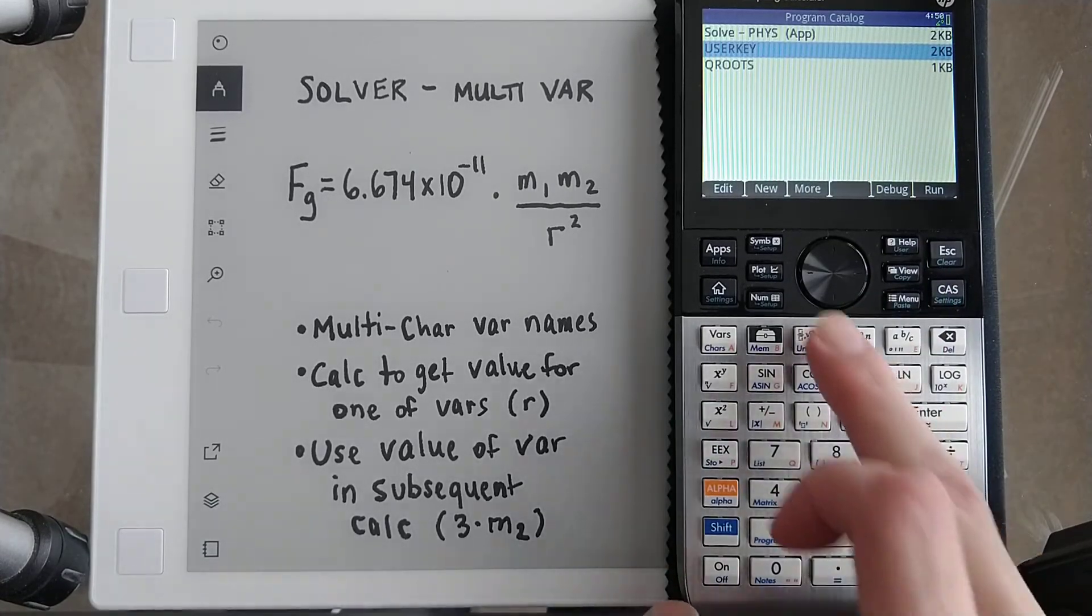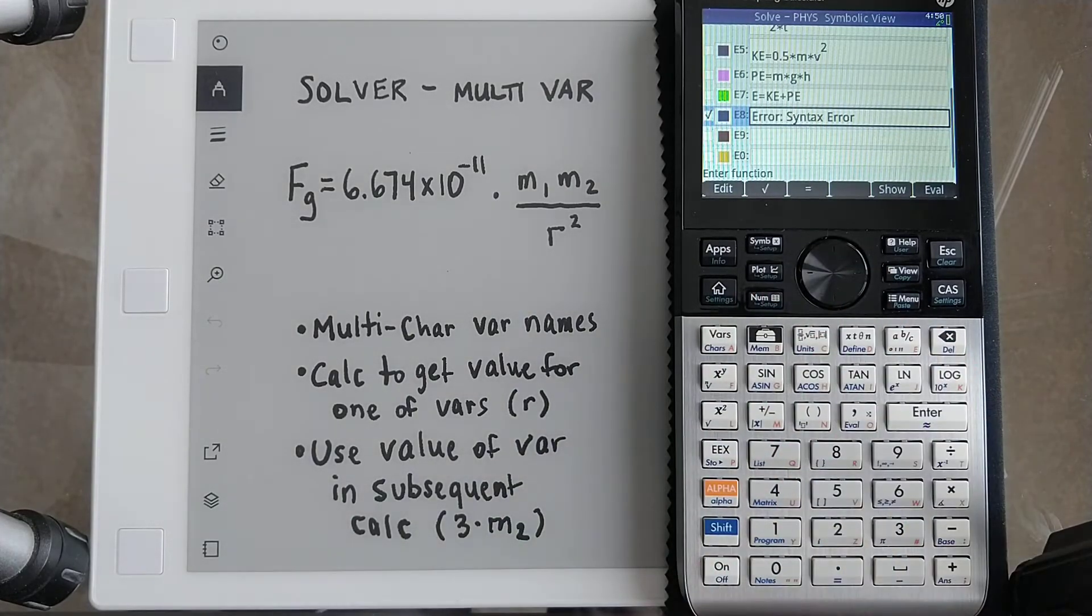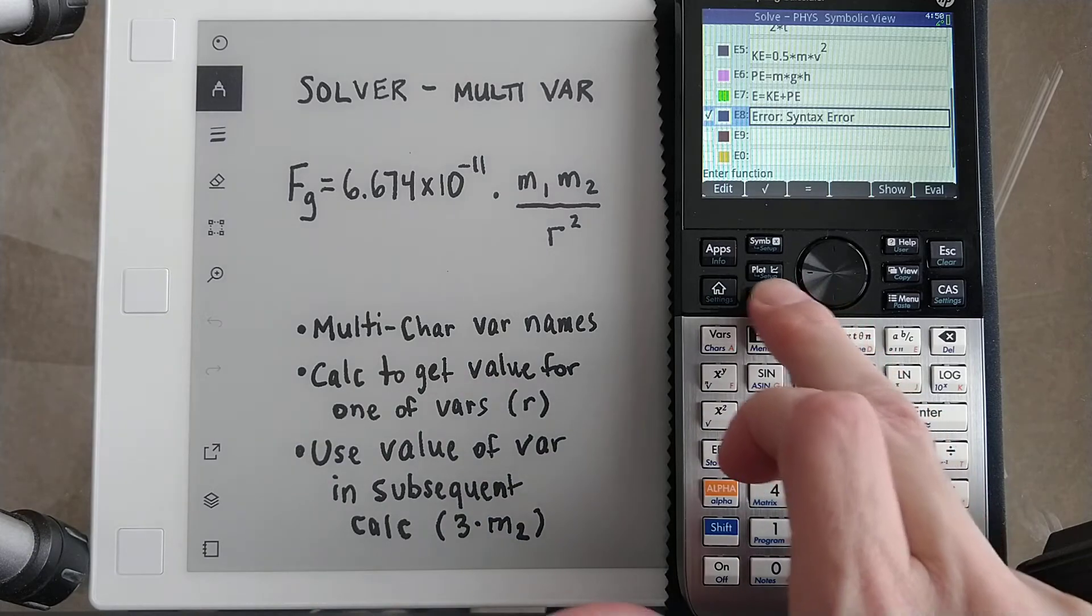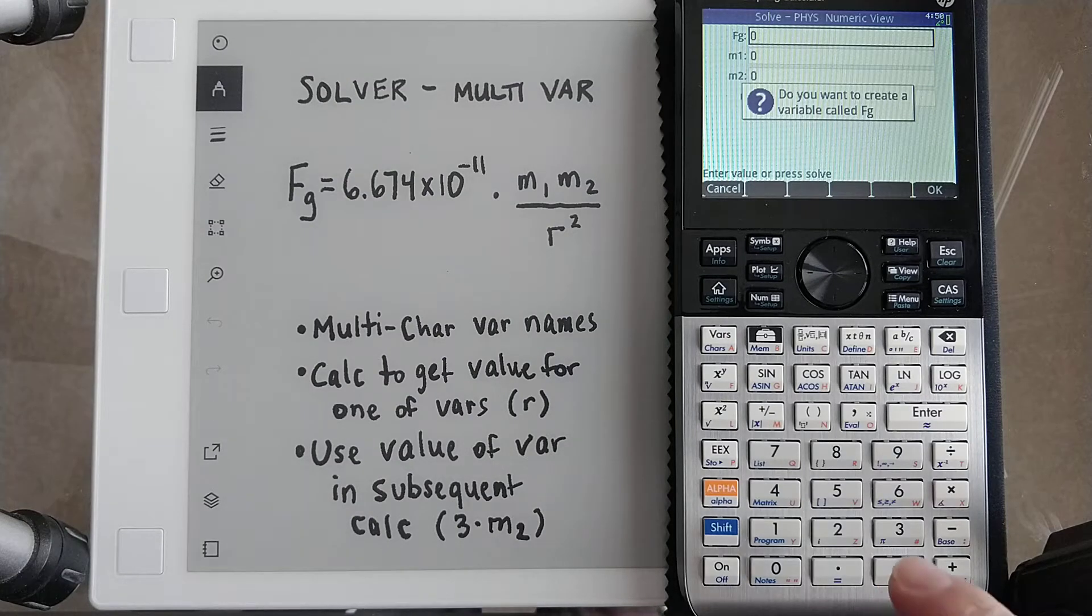So now those are not valid variable names. Oh, I'm getting a syntax error. Let me see what happens if I go into the solver. Yeah, if I go straight into the solver, it says, do you want to create a variable called fg? And it's like, well, that's interesting.